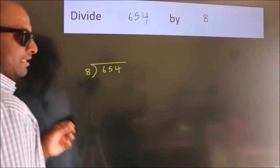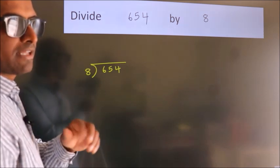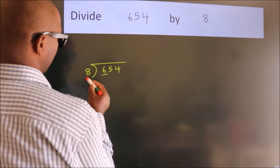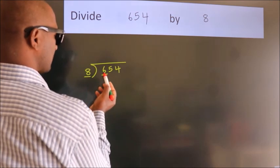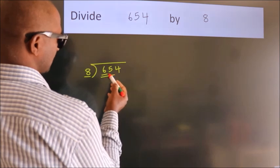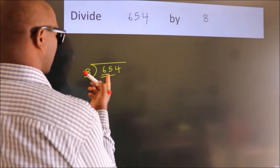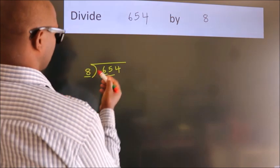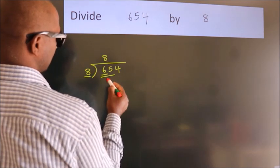This is your step 1. Next, here we have 6, here 8. 6 is smaller than 8, so we should take two numbers: 65. A number close to 65 in the 8 table is 8 times 8 equals 64.